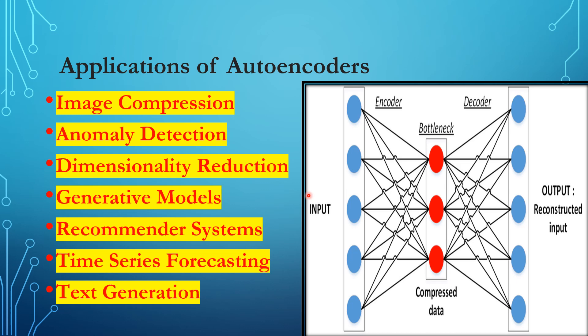Fifth, recommender systems: autoencoders can build recommender systems by learning latent representations of users and items, identifying their essential features to make personalized recommendations based on user preferences. Sixth, time series forecasting: autoencoders model and forecast time series data by learning underlying patterns and trends, making them useful for predicting stock prices, weather patterns, and other time-dependent phenomena. Finally, text generation: autoencoders can generate new text by learning underlying patterns in text data, useful for language translation, text summarization, and generating creative writing prompts.